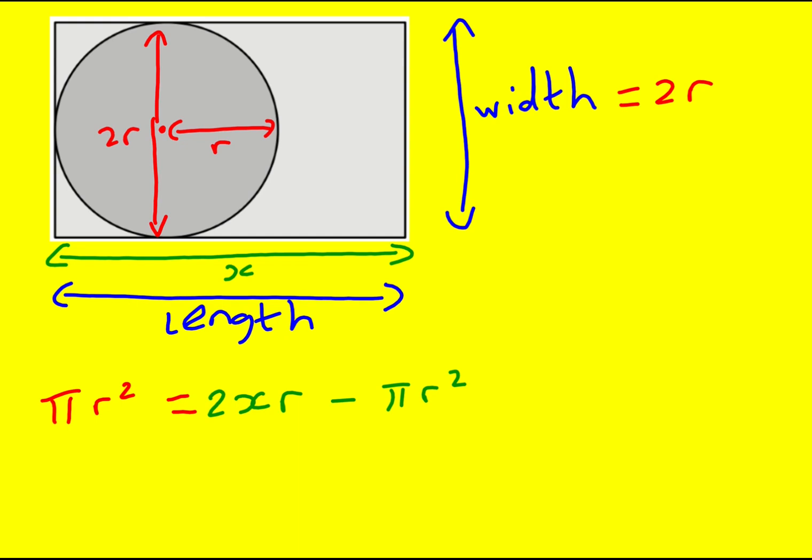Okay, this is brilliant because now I can just rearrange it. So it's going to be 2πr² = 2xr, and I can divide through by 2 and also divide through by r.